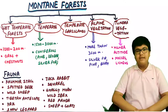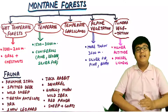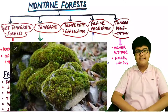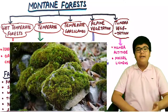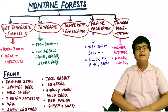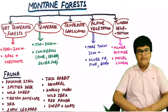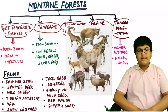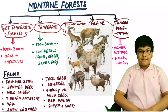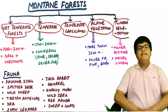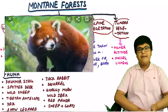Tundra vegetation is found at very high altitudes and includes mosses and lichens. The fauna found in all mountain forests includes the Kashmiri stag, spotted deer, wild sheep, Tibetan antelope, yak, snow leopard, rabbits, squirrels, shaggy-horned ibex, the rare red panda, and other sheep and goats.